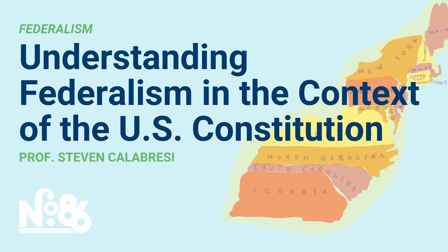Article 6 of the Constitution in its second paragraph contains a critical clause called the Supremacy Clause. The Supremacy Clause says: this Constitution, the laws made pursuant to it, and all treaties made or which shall be made, shall be the supreme law of the land, notwithstanding anything in any state constitution or law to the contrary. This clause is vitally important — it says federal statutes, treaties, and the federal constitution trump even state constitutions as well as state laws and state common law, allowing the federal government to preempt or displace state laws.